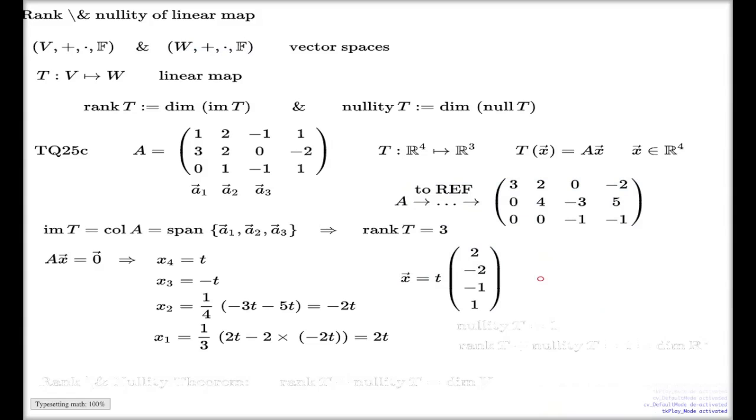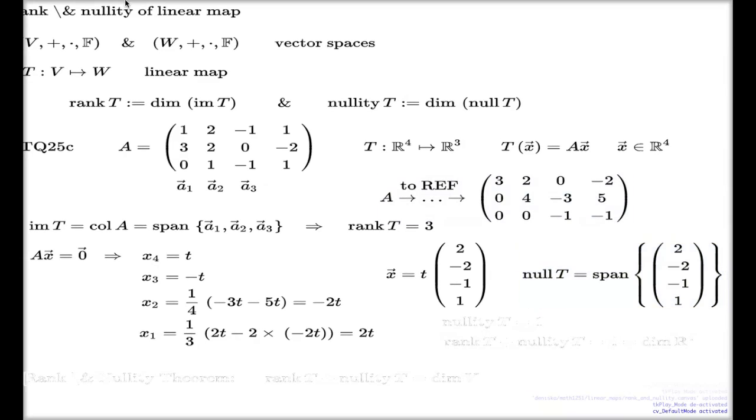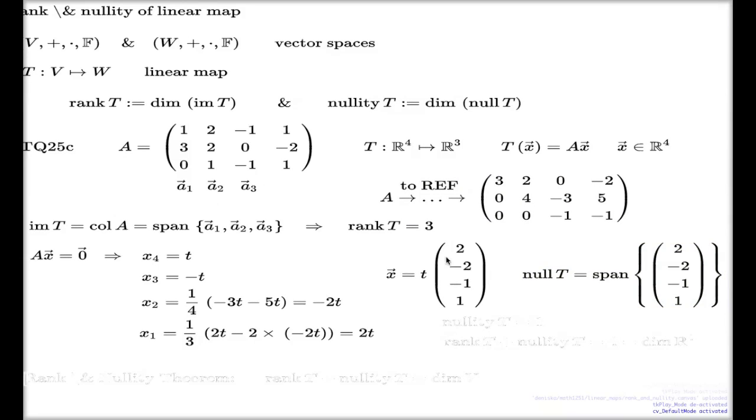So my null space is a collection of all solutions from here. It's simply the span of this one single vector. And therefore the nullity, which is a dimension of the null space, is 1.